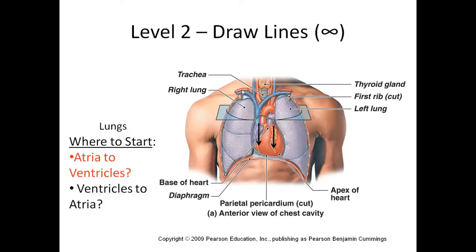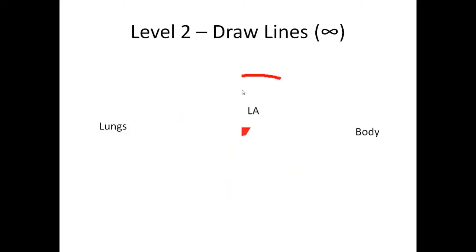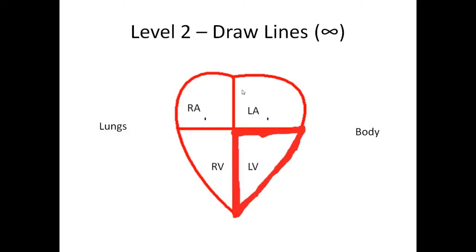The way to think about this is gravity — it's generally going to cause the flow of blood to go from the top down to the bottom. That's just a way to get started. So we draw arrows on each side from the right atrium to the right ventricle, and from the left atrium to the left ventricle. Next, decide whether to start at the right ventricle or the left ventricle.